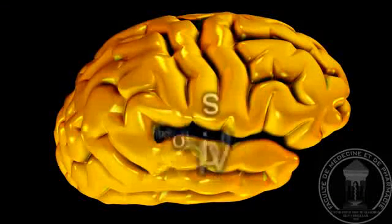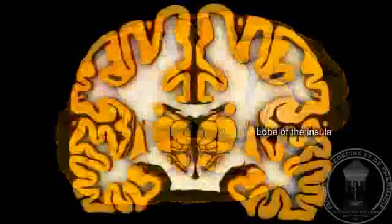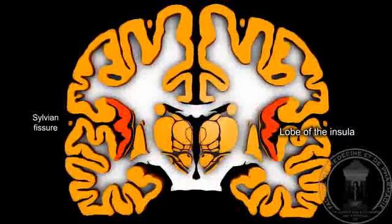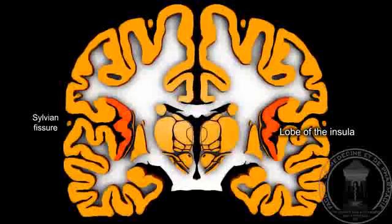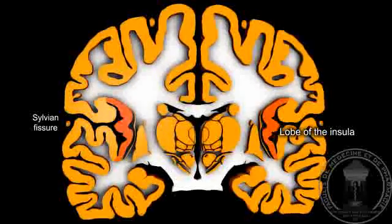In addition, there is a fifth lobe, non-visible on the surface, the lobe of the insula, found by removing the Sylvian fissure.